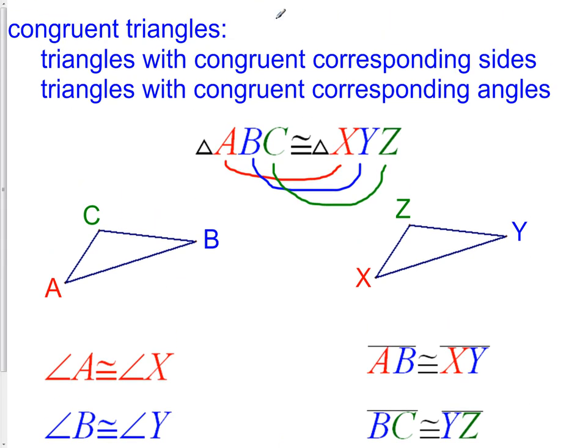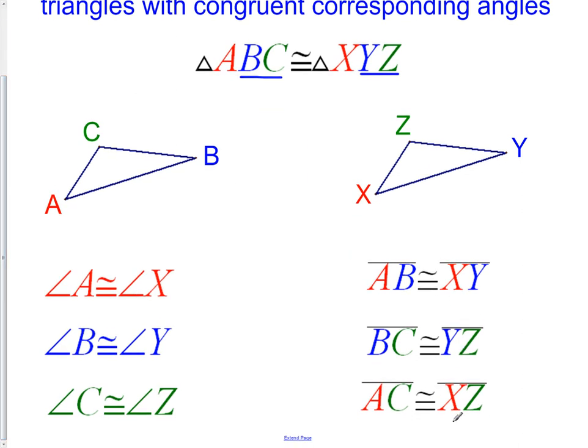Then we can also make a similar statement about the sides. We can state that side AB is congruent to side XY, AB being the first two letters and XY being the first two letters in each of their congruency statements. Then we have BC congruent to YZ. And lastly, AC congruent to XZ. Order is very important because we have to match up the corresponding parts.